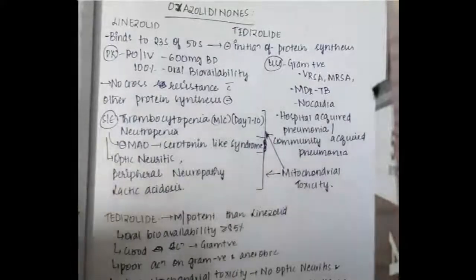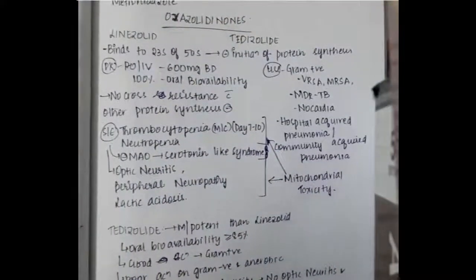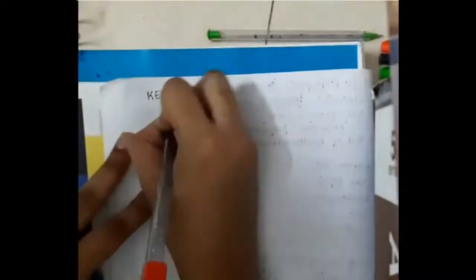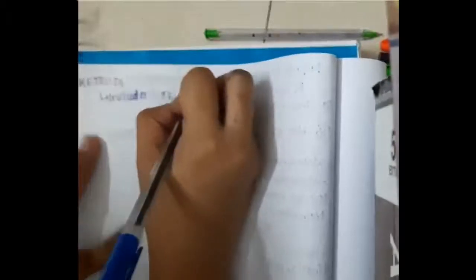Now, the next important group of drugs is ketolides. Ketolides include telithromycin.